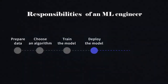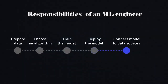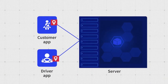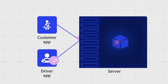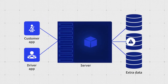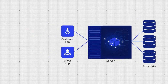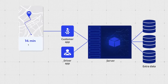Then he or she needs to connect the model to data sources. The applications will handle some part of the data, like driver and customer geolocation, current speed of the car, and so on. We'll also need extra data like traffic incidents, jams, or weather that comes from a separate database. From this point, the model can consume the required data, calculate a prediction, and send it back to the customer.